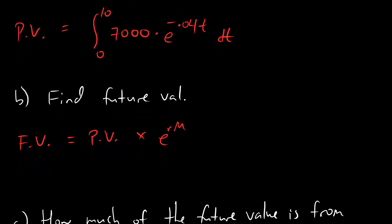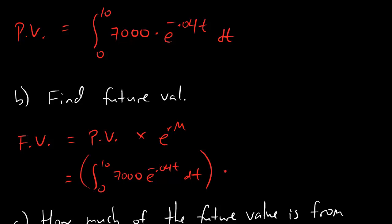e to the rm: r is the interest rate, m is the total time. So if you wanted a formula for this, it would look like the integral from 0 to 10 of 7,000 e to the minus .04t dt — all of that is one number — and then multiply it by e to the positive .04 times 10. In this case r is .04 and m is the total amount of time you invest for, which is 10 years. So we've got a present value and a future value.